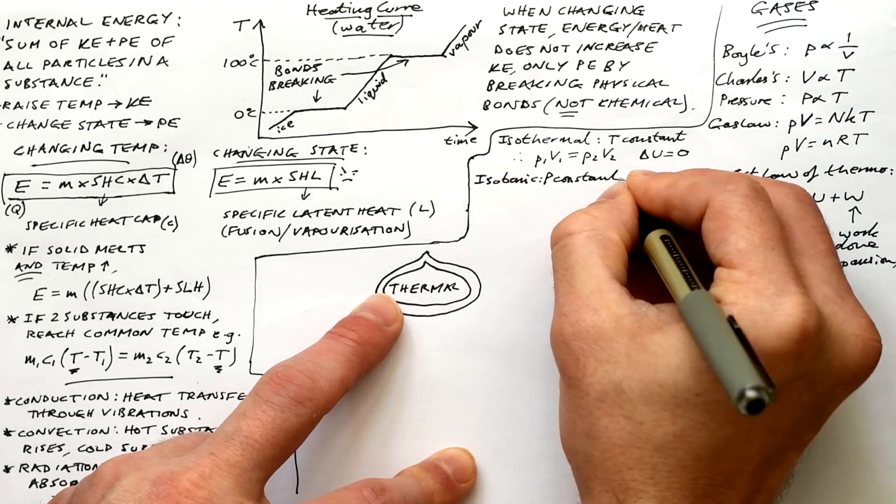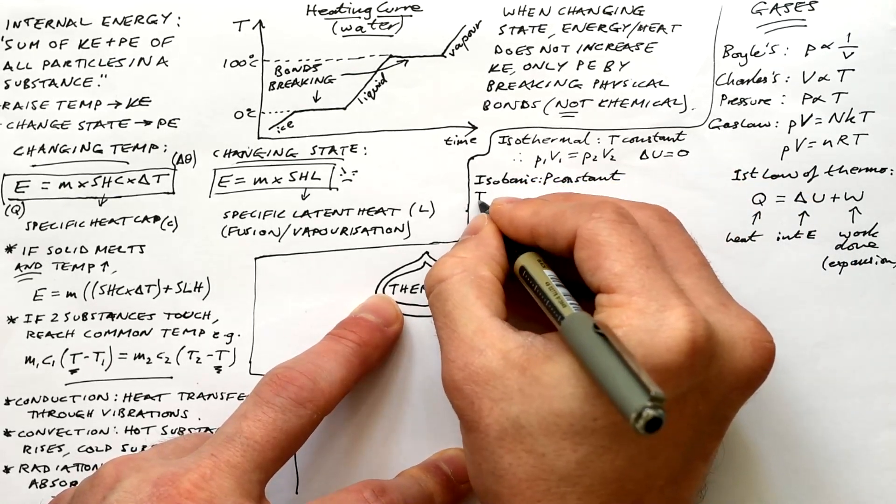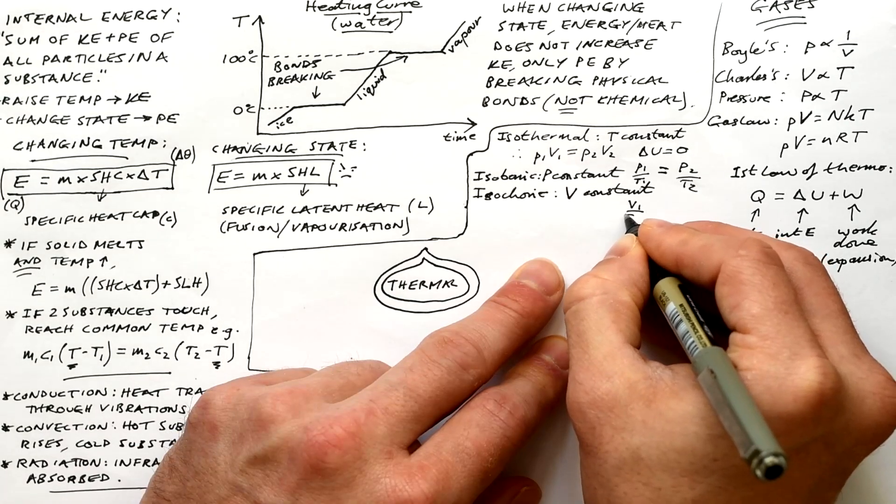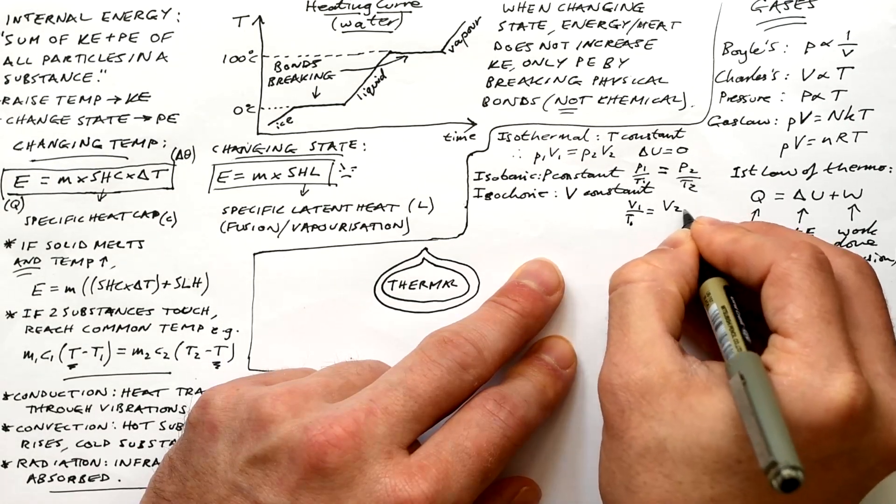Isobaric, that's when pressure is constant. Isochoric, that's when volume is constant. We can create proportionality equations similarly for those two. I've put them the wrong way around here, but they're fixed with the mind map.